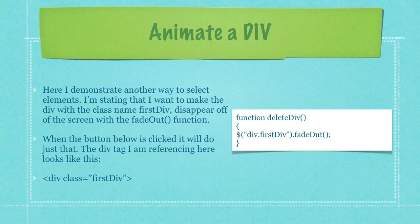Here I demonstrate another way to select elements. I'm stating that I want to make the div with class name 'first div' disappear off the screen with the fadeOut function. When the button below is clicked it will do just that. The div tag I'm referencing looks like what you can see here in the third bolded item on the lower left.